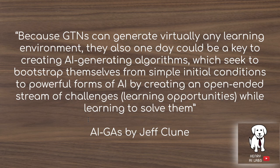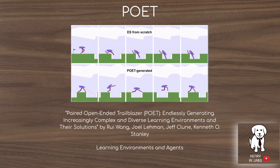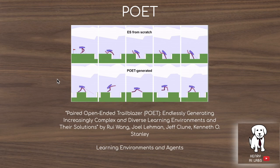The paper AI-GAs by Jeff Clune explores these kinds of algorithms. Similarly, the POET paper — Paired Open-Ended Trailblazer — endlessly generates increasingly complex and diverse learning environments and their solutions. Rather than generating a dataset directly, POET evolves different environment parameters for a bipedal walking task while simultaneously evolving the agent, allowing diversity where an agent struggling in one environment can transfer to another.